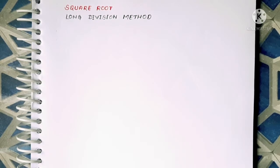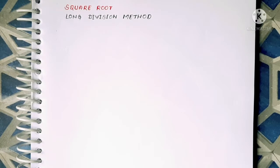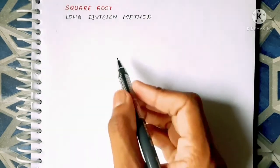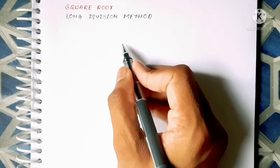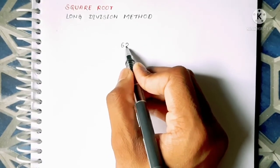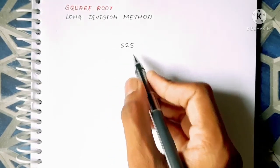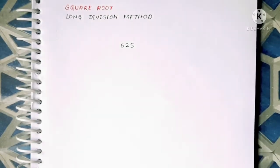So let's start. First of all to find long division method we will have to follow some steps. The steps which we should take are - first of all we write an example as 625, we take a number to which we have to find the square root of.